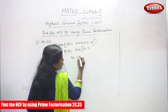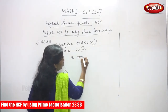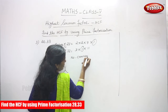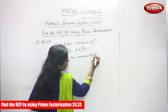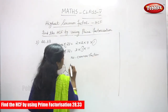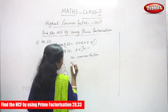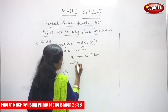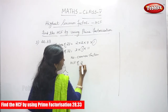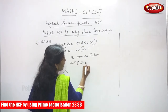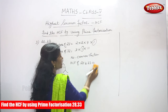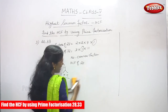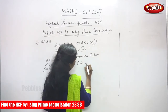CF means common factor — there is no common factor. So the HCF of 28 and 33 is 1.